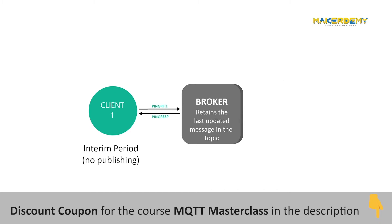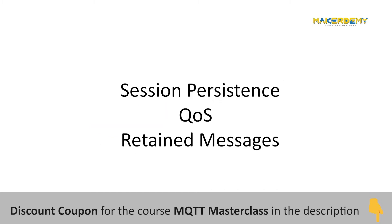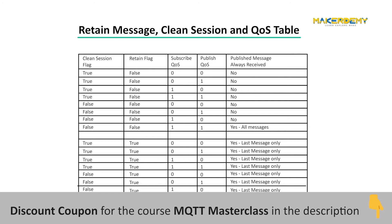Yes, this sounds confusing — this is why it is so important that we are clear on these topics. Basically, session persistence depends on the retained flag and the publish and subscribe QoS levels. We have come up with a table based on our observations. Note that since QoS level 1 and QoS level 2 react the same way for session persistence, we have only mentioned QoS level 1. Based on this table, it is clear that only when the retained flag is false and both the publish and subscribe QoS level is 1 or above are all the undelivered messages retained and transmitted.